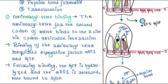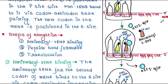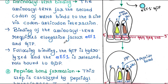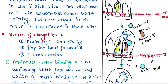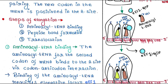Binding of the aminoacyl tRNA requires elongation factor EEF1 and GTP — EEF1 is specific for eukaryotes. EEF1 along with GTP helps the aminoacyl tRNA to fit into the A site. Following binding, the GTP is hydrolyzed and EEF1 is released. Once the aminoacyl tRNA is fitted, EEF1-GTP has no further role, so hydrolysis of GTP takes place: GTP becomes GDP, and EEF1 along with GDP gets released.